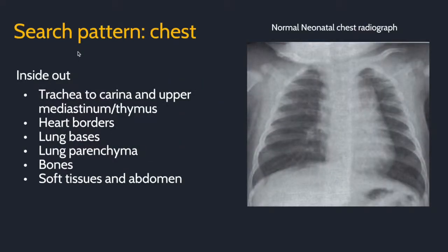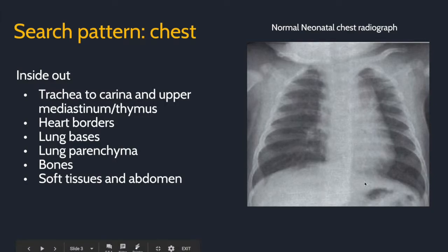The search pattern for chest radiographs is the same as in adults. I start with the midline structures, look at the trachea, the upper mediastinum, and the thymus, look at the heart borders, look at the lung bases, look at the lung parenchyma, the bones, the surrounding soft tissues, and the abdomen.